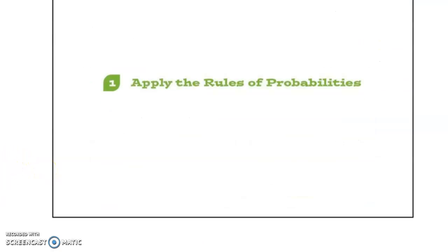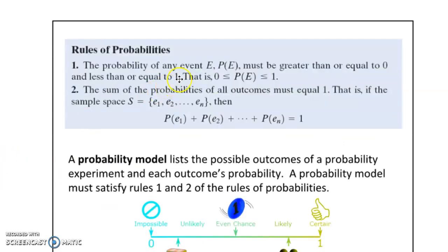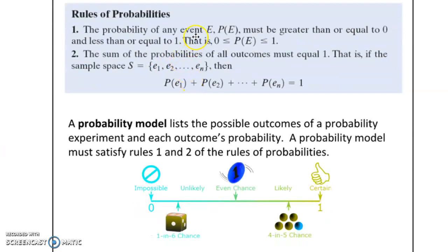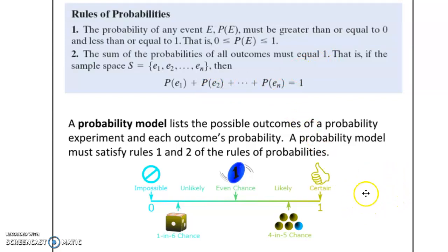One of the rules of probability is that all probability measures are between zero and one inclusive — the probability of an event or outcome could be zero, it could be one, or anything in between. Usually we represent them as a fraction or a decimal. The sum of all probabilities of all outcomes of an experiment must equal one. For example, the chance of getting heads is 0.5 and tails is also 0.5 — add those together and you get one.